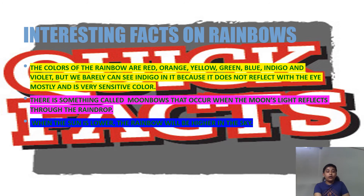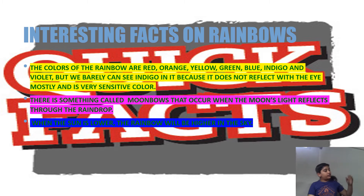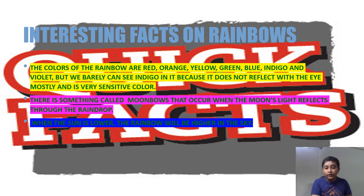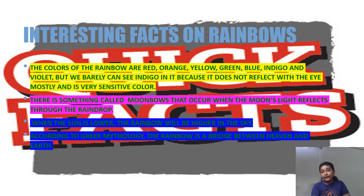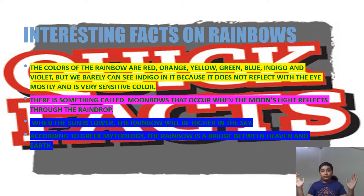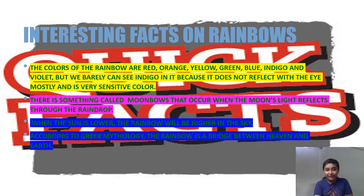When the sun is lower in the sky, the rainbow will be higher. So the lower the sun, the higher the rainbow appears. According to Greek mythology, a rainbow is a bridge between heaven and earth — but actually that's just a myth, not real.